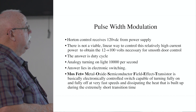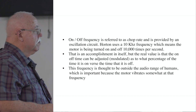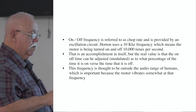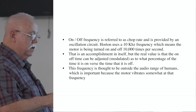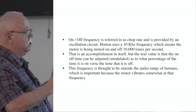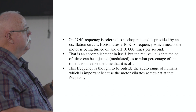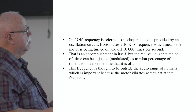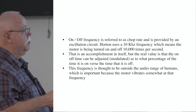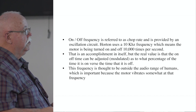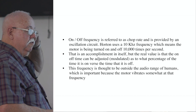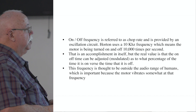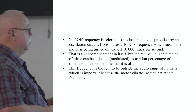The on/off frequency is referred to as the chop rate. We tell the machine to turn it on and off 10,000 times a second using an oscillation circuit, also called the chop rate. Horton uses 10 kilohertz, which is supposed to be higher than what the human ear can detect.